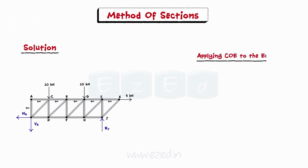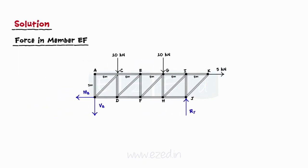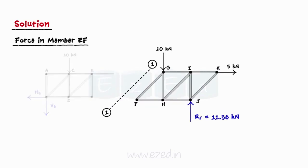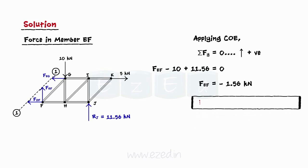We will first draw the FBD of the entire truss and apply conditions of equilibrium to it. We will first equate the summation of moments of all forces about point B to zero. On substituting the magnitudes of the forces in the system and their moment arms from joint B, we get the normal reaction about point J to be 11.56 kN. Now we will find the force in member EF. We will cut the truss about section 1-1 as shown in the free body diagram, instead of using section A-A as it would cut through four unknown members. We find the force in member EF as 1.56 kN, compressive in nature.